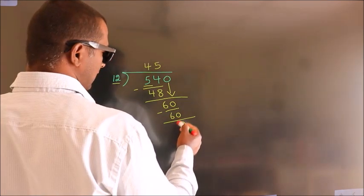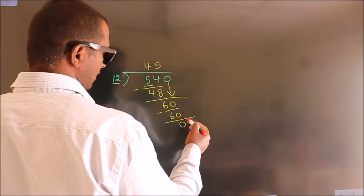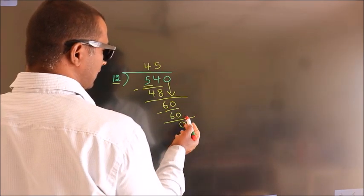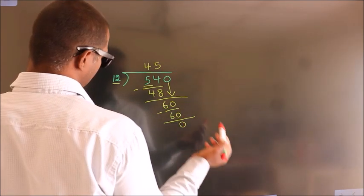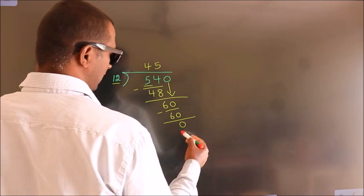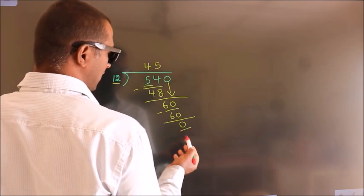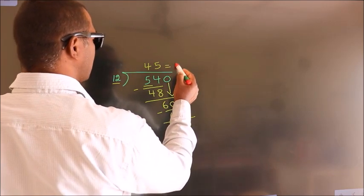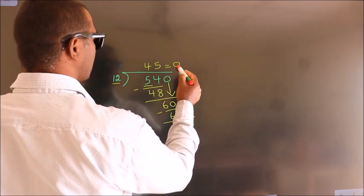After this, there are no more numbers to bring down, and we got remainder 0. So this is our quotient.